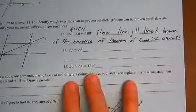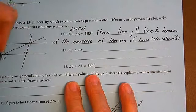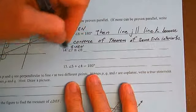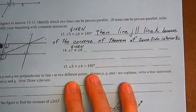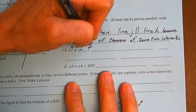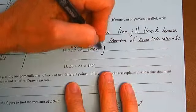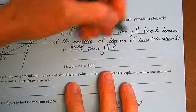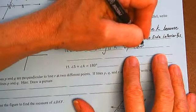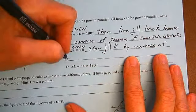Problem 14: angle 7 congruent to angle 8. Given angle 7 congruent to angle 8, then J is parallel to K by the converse of the corresponding angles theorem.